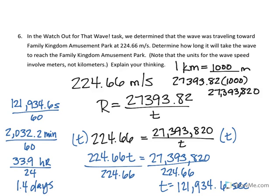So what this is telling us is that Family Kingdom basically has a day, almost a day and a half, before that tsunami reaches them that they have to prepare. Or if you want to look at it in terms of hours, they have about 34 hours before that tsunami reaches them to make preparations. That concludes Lesson 2, where we looked at inverse functions, inverse variation functions.